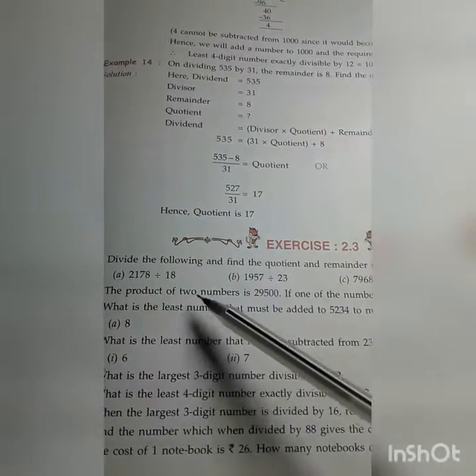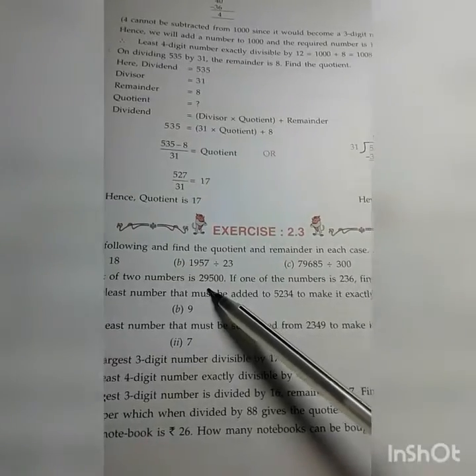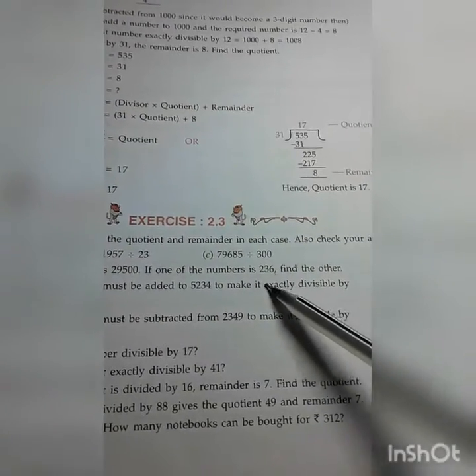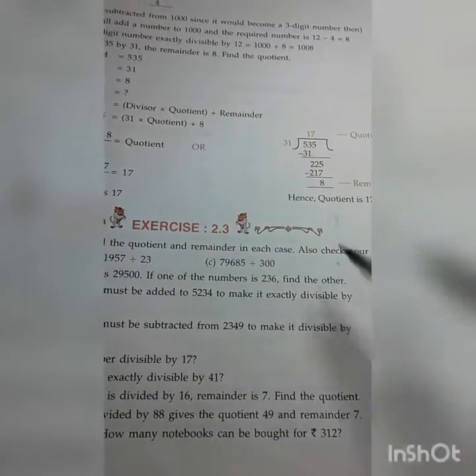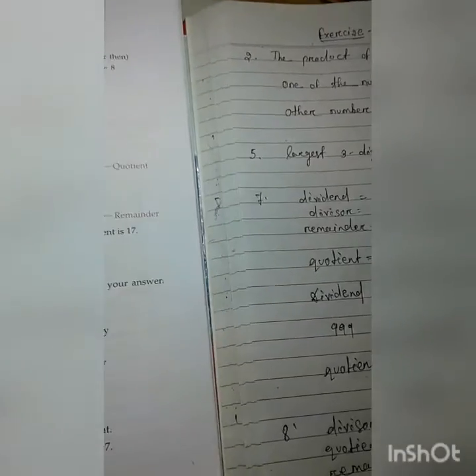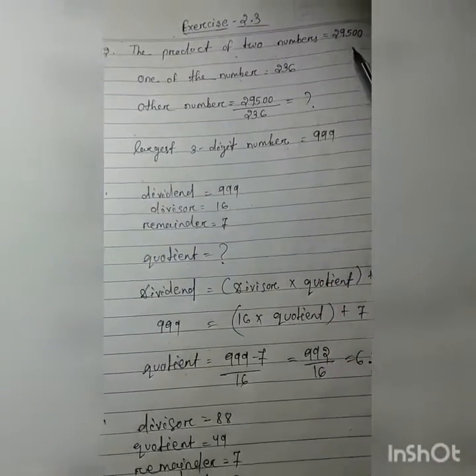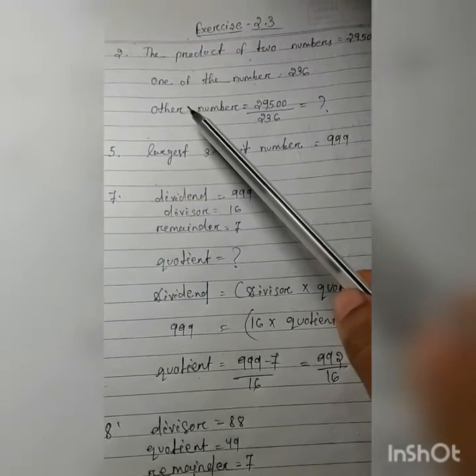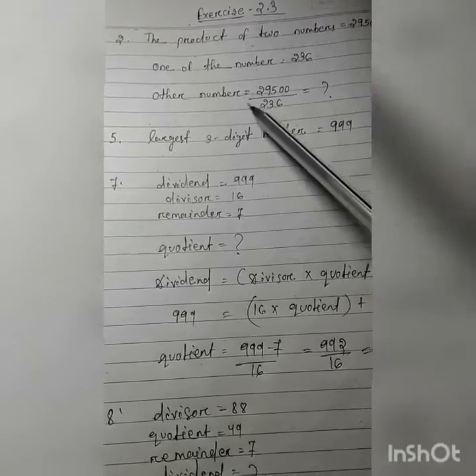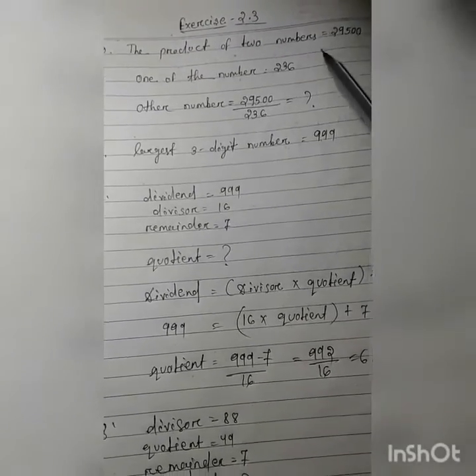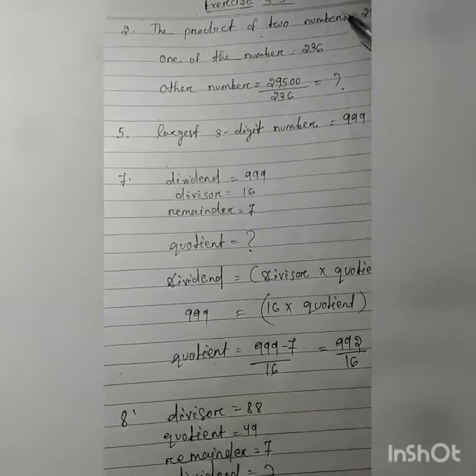multiplication result is given. And among them, one number is given and you have to find out another number. Here you see, first you write the product of two numbers equal to this much. One of the number is this much. Then other number means you have to divide this number and this number. Then you get the result.